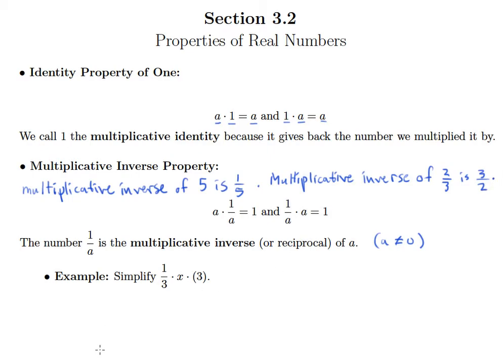So that's what the multiplicative inverse is. When you multiply a number by its inverse, you get 1 back.